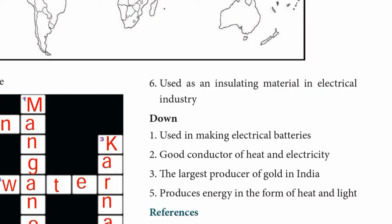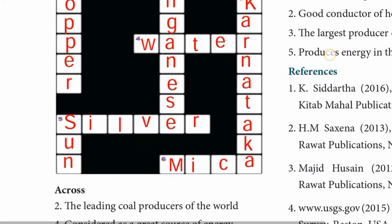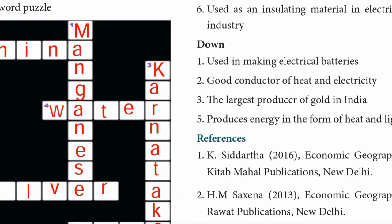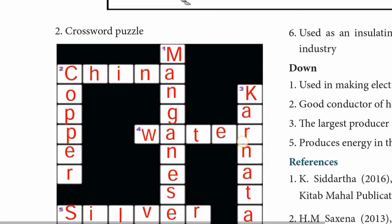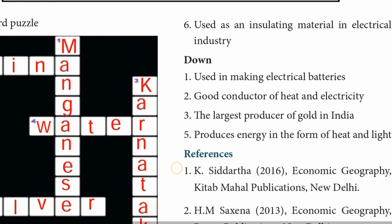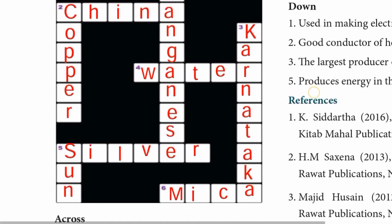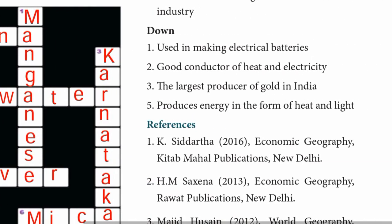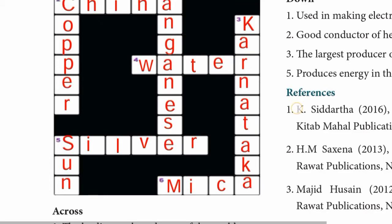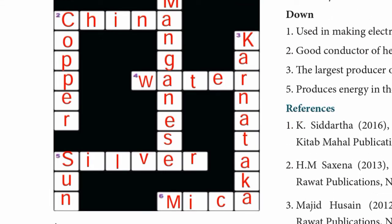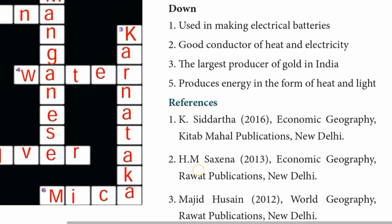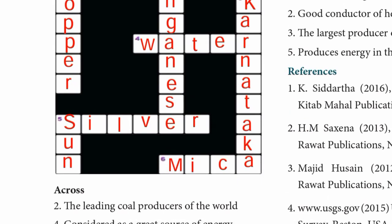Sixth across: used as an insulating material in the electrical industry - the answer is Mica, M-I-C-A. Down, first one: used in making electrical batteries - the answer is Manganese, M-A-N-G-A-N-E-S-E. Second down: good conductor of heat and electricity - the answer is Copper, C-O-P-P-E-R. Third down: the largest producer of gold in India - the answer is Karnataka, K-A-R-N-A-T-A-K-A. Fifth down: produces energy in the form of heat and light - the answer is Sun, S-U-N.